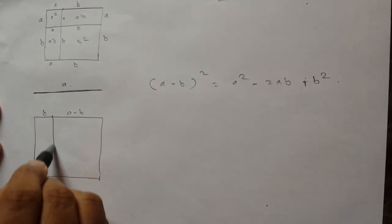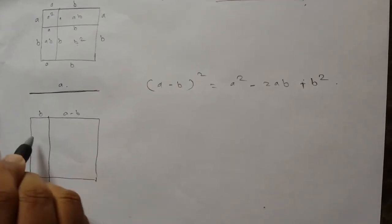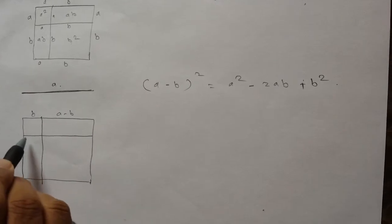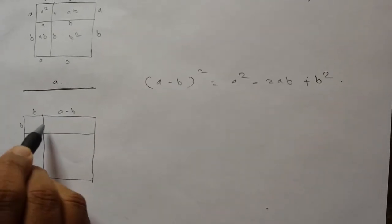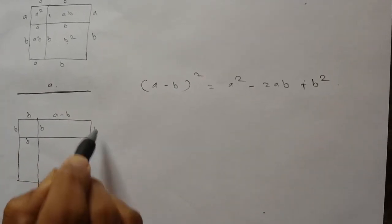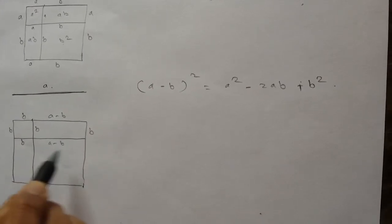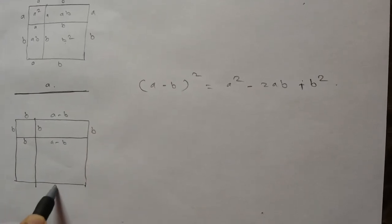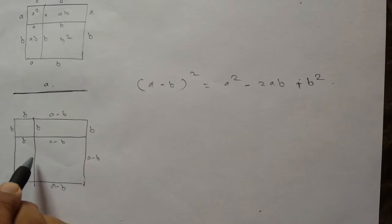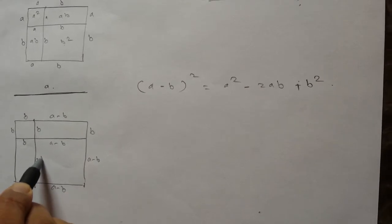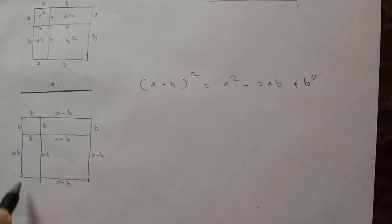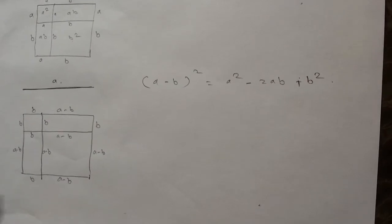So this is b, this is b, this is b, this is b, this is b. This is a minus b, this is a minus b, this is a minus b, and this is b.